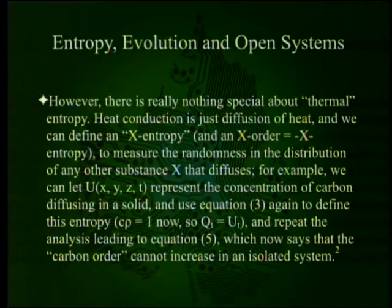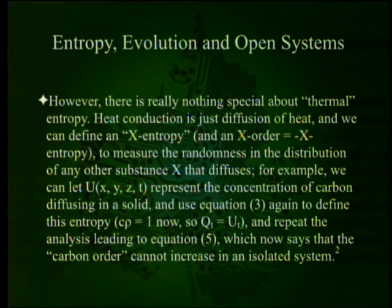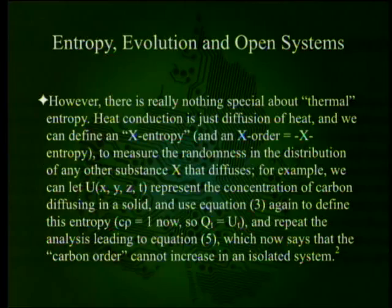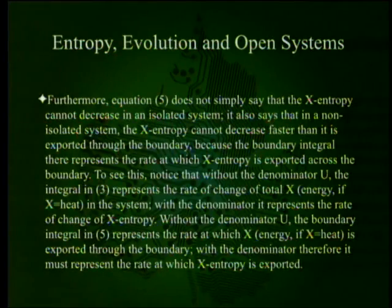However, there is nothing really special about thermal entropy. Heat conduction is just diffusion of heat, and we can define an x-entropy and an x-order — which is minus x-entropy — to measure the randomness in the distribution of any other substance x that diffuses. For example, we can let u(x,y,z,t) represent the concentration of carbon diffusing in a solid and use equation 3 again to define this entropy. And repeat the analysis leading to equation 5, which now says that the carbon order cannot increase in an isolated system — or the iron order, or various other kinds of order you can think of.